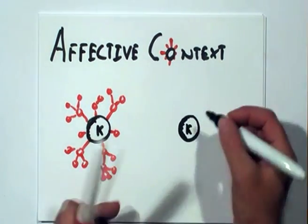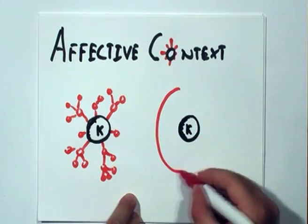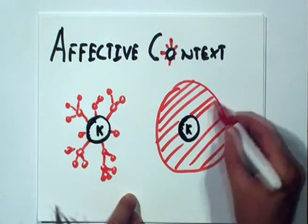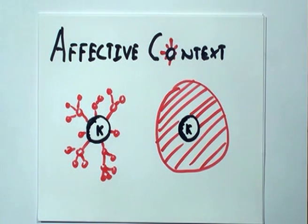Effective context is just shorthand for saying all those things your brain deems to be significant about a situation or object, expressed as emotions, and over which you have limited control.